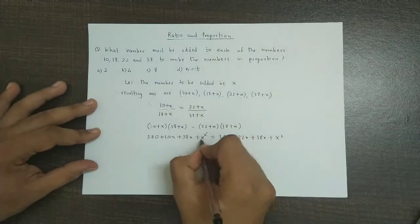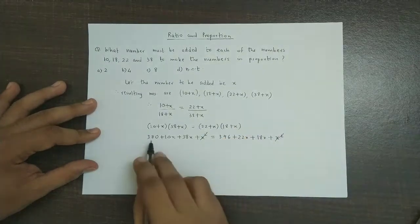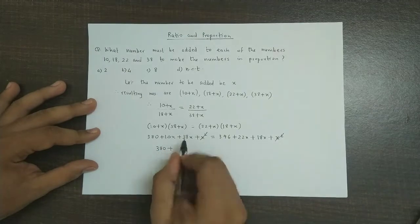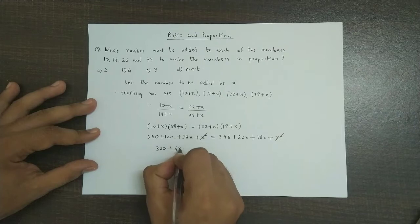So we could cancel x square on both the sides. So here we have 380 and this total is 48x.